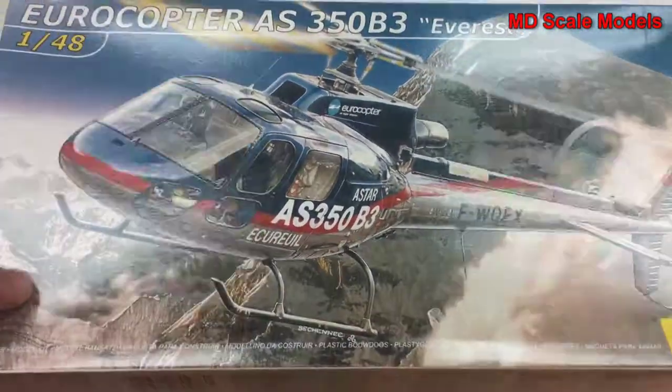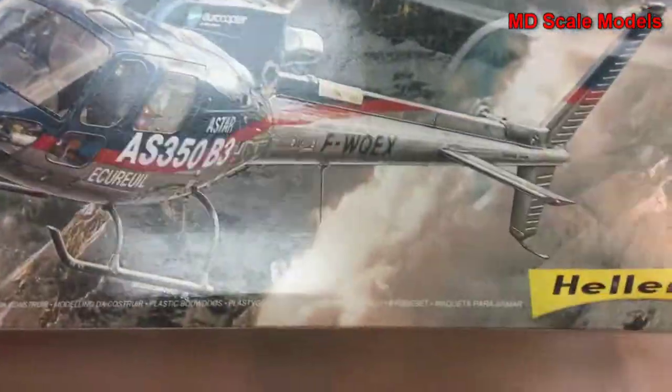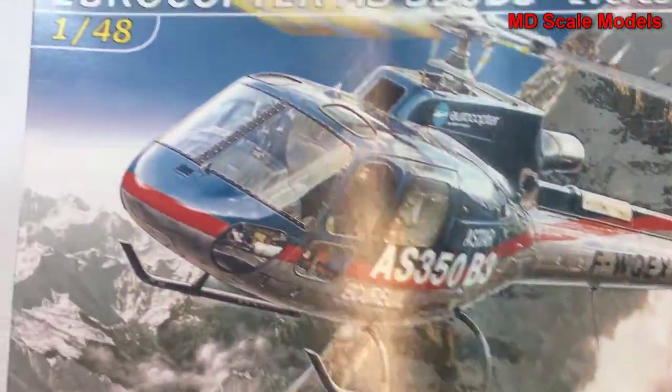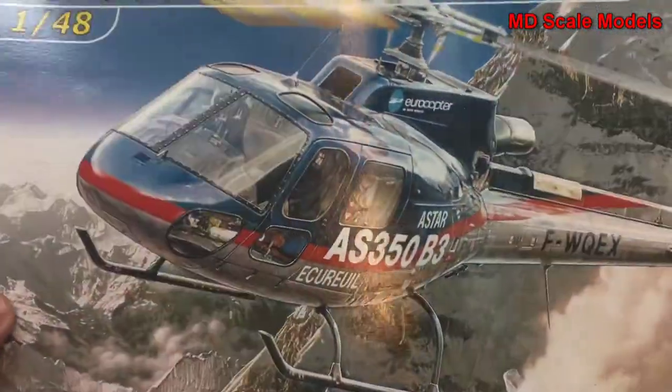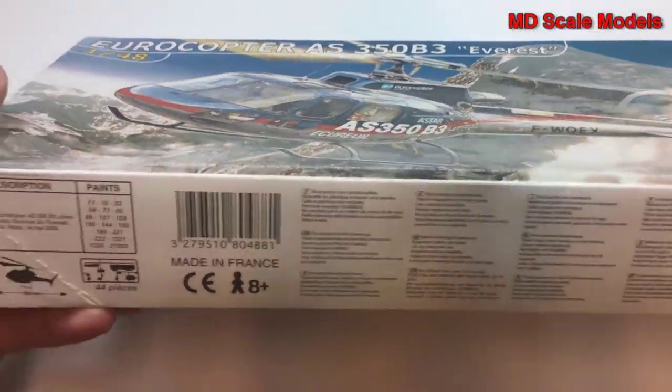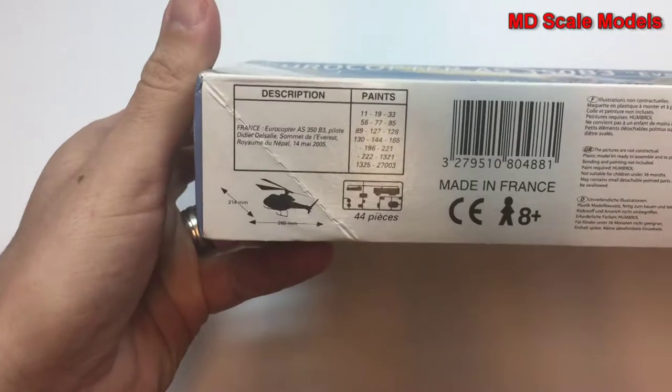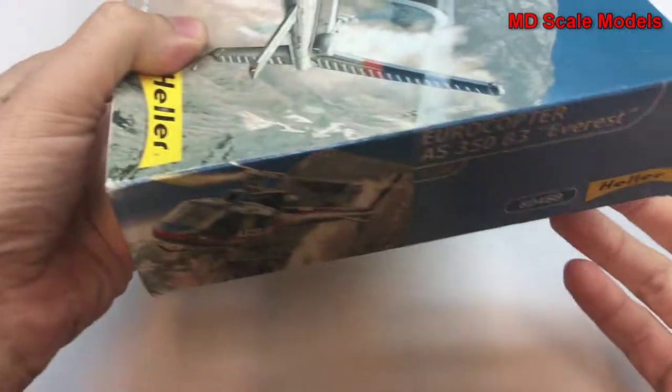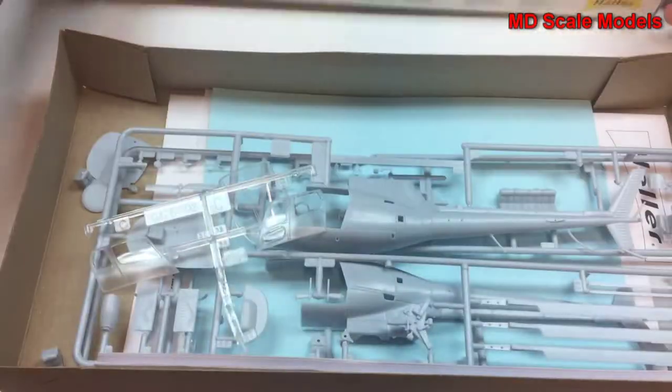This model kit review is of the Eurocopter by Heller Models. It's a 1:48 scale model with 44 pieces, and the box art here is the only picture you get. Not really much else in the way of the box art. Let's have a look inside.